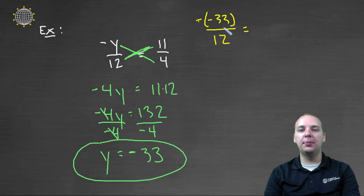A negative times a negative is a positive, so this is equivalent to thirty-three over twelve. It looks like both of these have a common factor of twelve, thirty-three is three times eleven, and twelve is three times four.